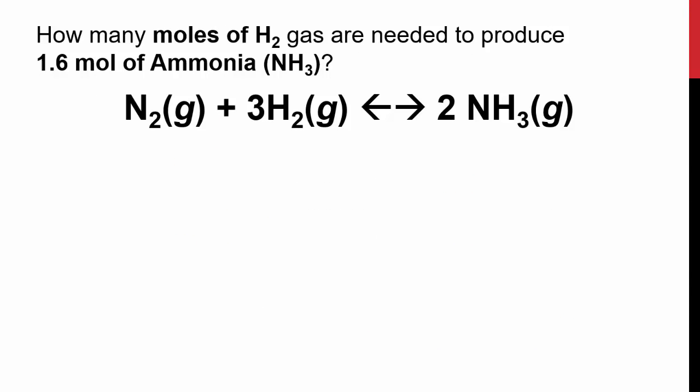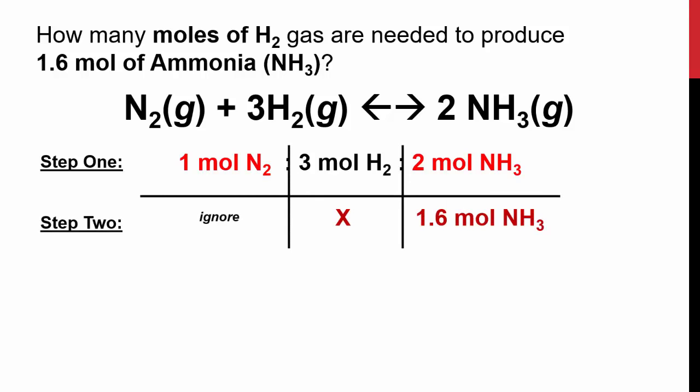In this next example, we're going to try it out with how many moles of hydrogen gas are needed to produce 1.6 moles of ammonia. Again, first determine your mole ratio from your balanced equation. We have 1 mole of nitrogen, 3 moles of hydrogen, creating 2 moles of ammonia. Then, you add the information that is given to you. We're talking about moles of hydrogen, but we don't know how many, so that's going to be x. And then we have 1.6 moles of ammonia. So, we put that right underneath the original amount of ammonia. Notice that we're ignoring, in this case, the nitrogen gas.